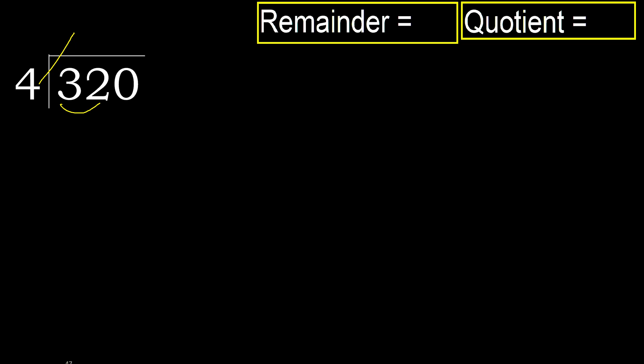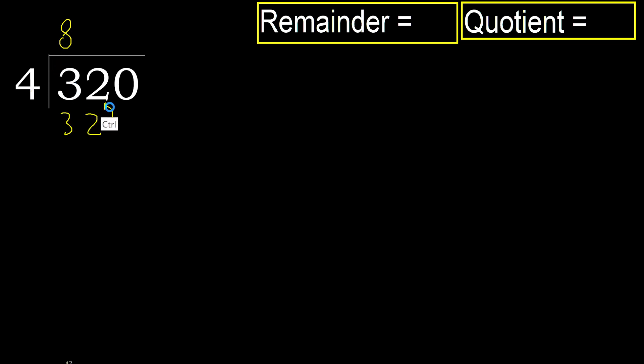4 multiply by 9 equals 36 — 36 is greater, so that's too big. 4 multiply by 8 equals 32 — 32 is not greater, so 8 is correct.